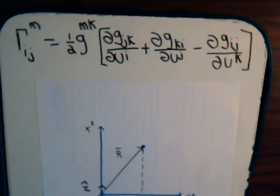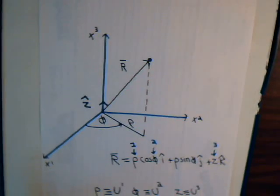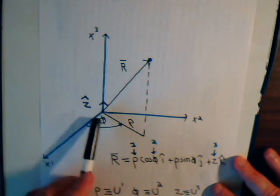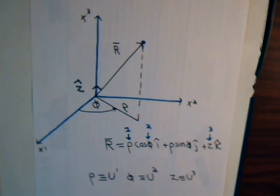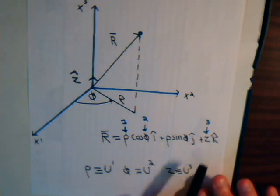Remember from the last video, the setup for cylindrical coordinates: we have psi, rho, and z, where the position vector r can be expressed like this.